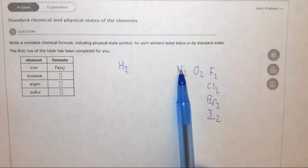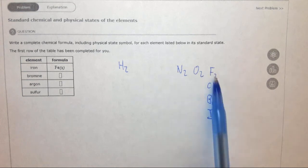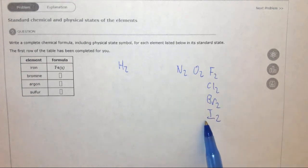And one way to remember this is that on a periodic table this kind of looks like a seven, and there are seven diatomic elements. So these are your diatomic elements.